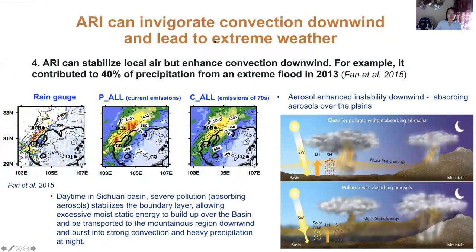ARI can also invigorate convection downwind and lead to extreme weather. In a study from the Sichuan basin and mountainous region, the enhancement of precipitation over the mountain region is mainly because suppression of convection over the plain causes accumulated moisture and energy to be transported by prevailing winds to the mountainous region, triggered by orographic lifting.